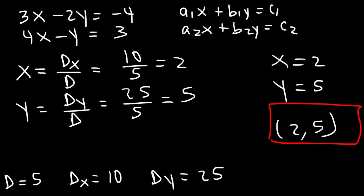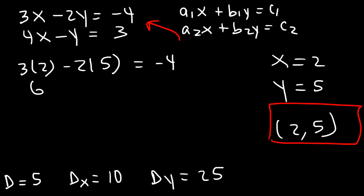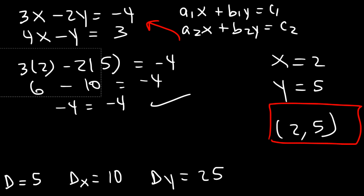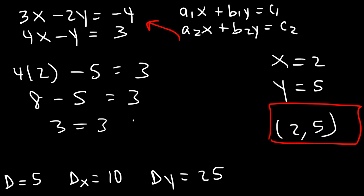If you want to check your work, simply plug the values into the original equations. For the first equation: 3 times 2 minus 2 times 5 equals 6 minus 10, which is negative 4. That works. For the second equation: 4 times 2 minus 5 equals 8 minus 5, which equals 3. That works too. Now you know how to use Cramer's rule to solve a system of linear equations with two variables.